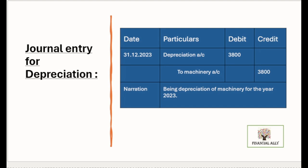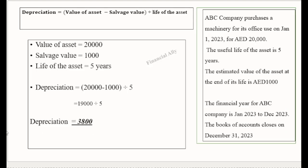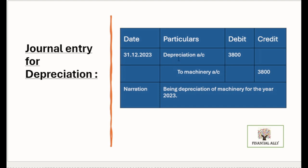Now let's see the journal entry for depreciation. Depreciation would usually be passed at the end of the year, that is 31-12-2023. The entry is: depreciation account debited 3,800, to machinery account 3,800. Narration: depreciation of machinery for the year 2023. This entry is passed once at the end of the year and it reflects in the profit and loss account of the company.